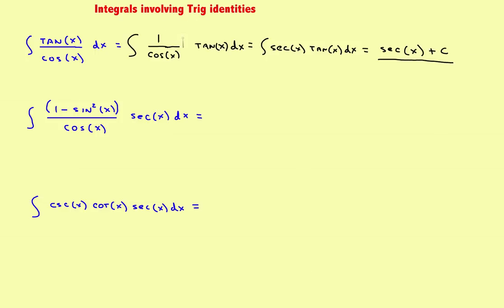The trick is to separate the tangent, leaving one over cosine, and one over cosine is secant. That gets you to something on the list so you can take the antiderivative. Sometimes it takes a little manipulation.